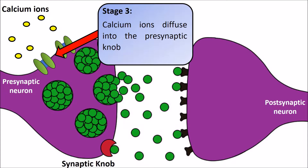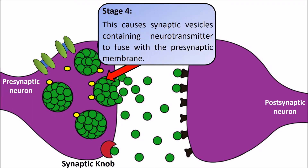The calcium ions diffuse down the concentration gradient into the presynaptic neuron. They then bind with vesicles containing neurotransmitter.